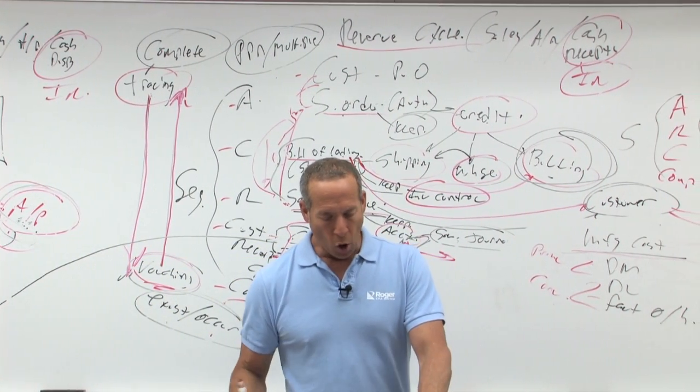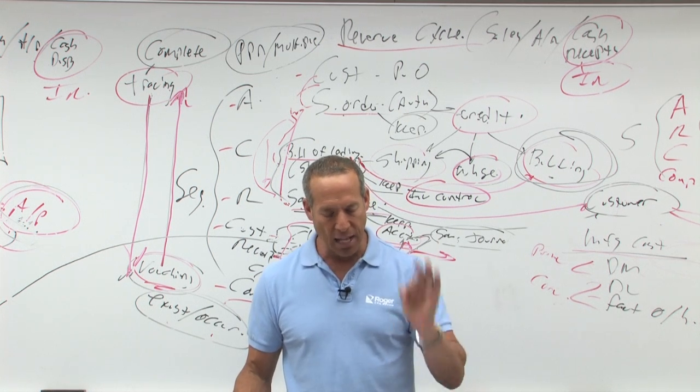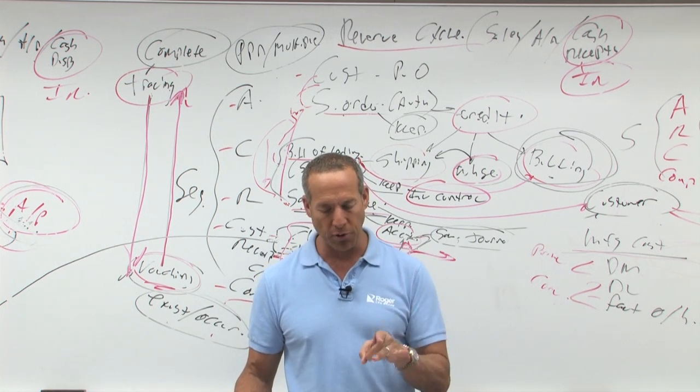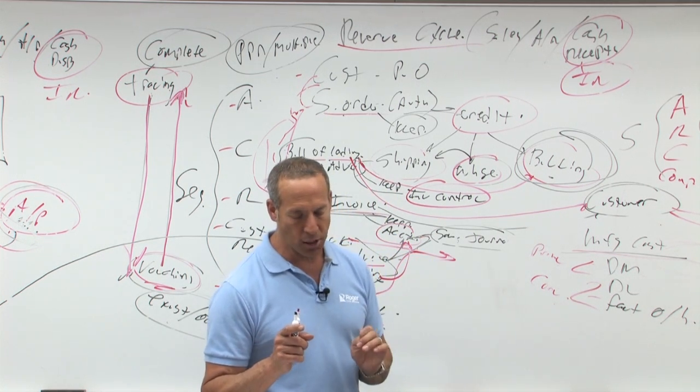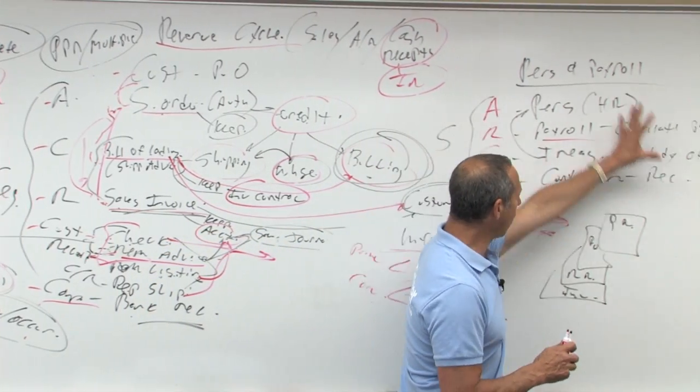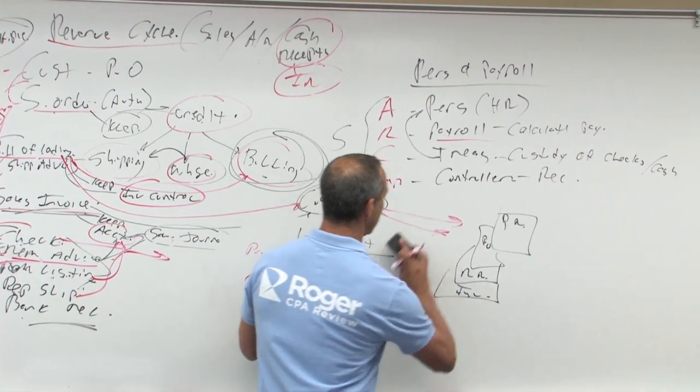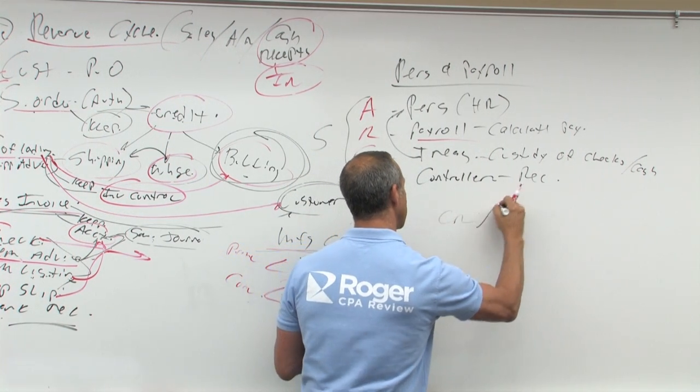Number 13. An auditor most likely would assess control risk at a high level if the payroll department supervisor is responsible for doing what? So here's personnel. As we talked about, assessing personnel high. So that means control risk is high. Why? Because reliance is low.